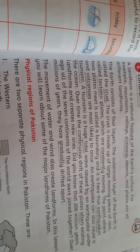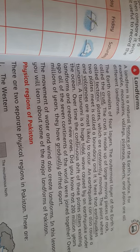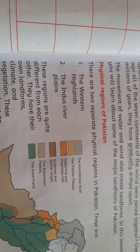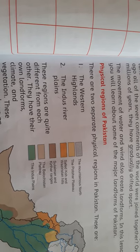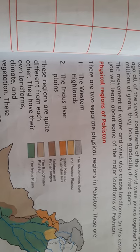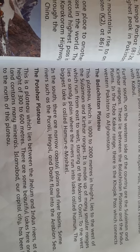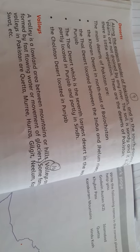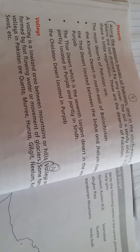First of all, you have learned about the earth layers — what layers there are and their thickness. In this lesson you also learned about the physical regions: the western highlands, the Indus plains, Baluchistan plateau, the Potohar plateau, and the deserts and valleys.